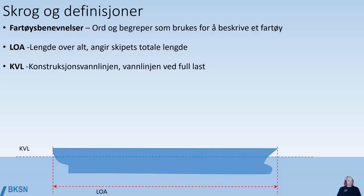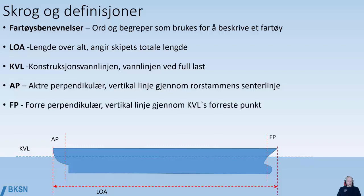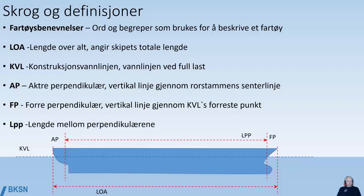AP, the aft perpendicular, is a vertical line through the center of the rudder shaft. The fore perpendicular is a vertical line through the foremost point of the construction waterline. And LPP, the length between the perpendiculars, is the distance between the aft perpendicular and the forward perpendicular. It is also a much-used measurement when describing the length of ships.